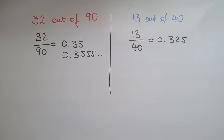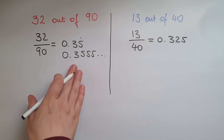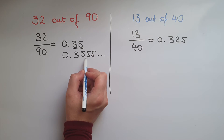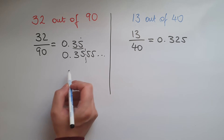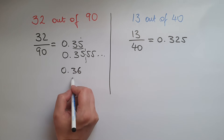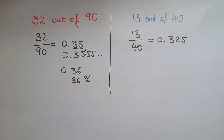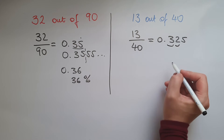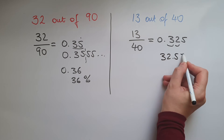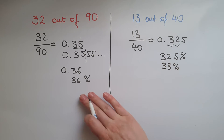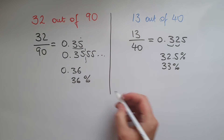So we'll convert these to percentages. This is 35%, but looking at the digit after the 5, which is 5 again, so that means we need to round up, and this is going to be 0.36, which is the same as 36%. This one here is 32.5%, which we can round up to 33%. Comparing the two shows that 36% is greater.